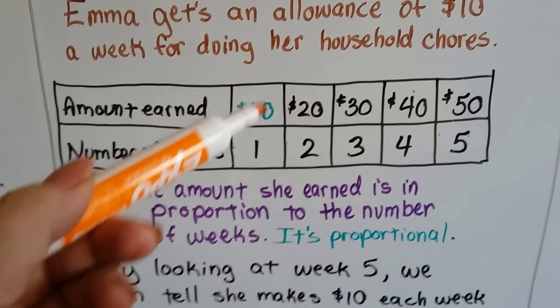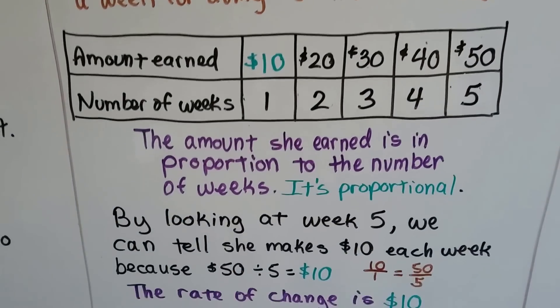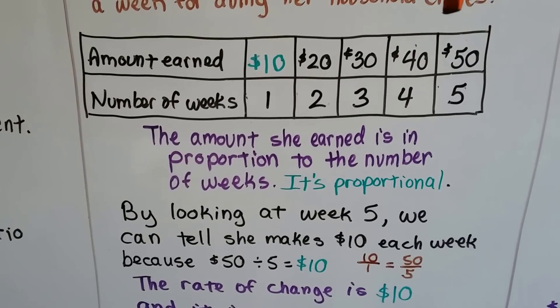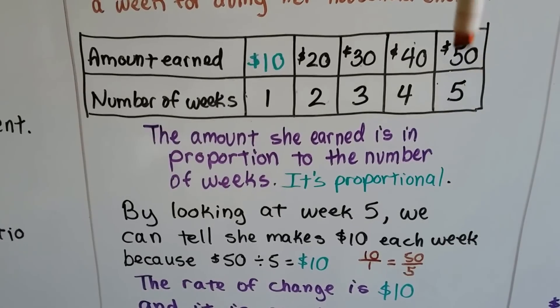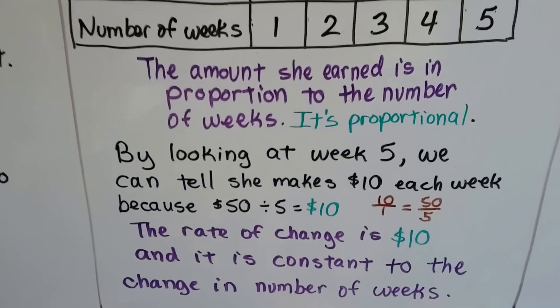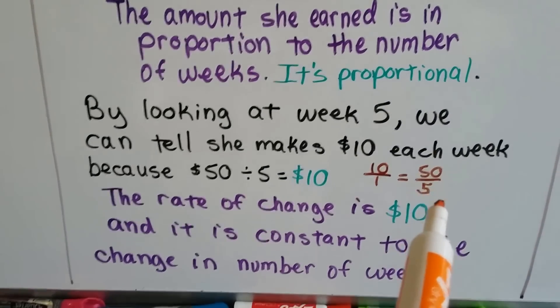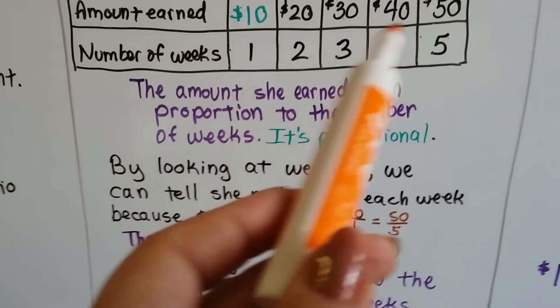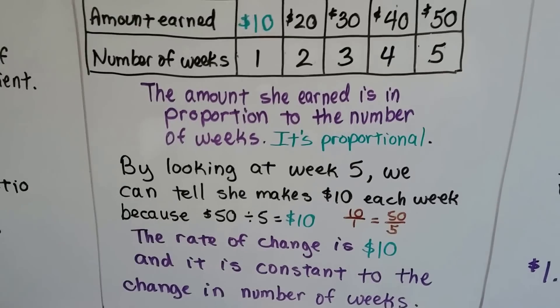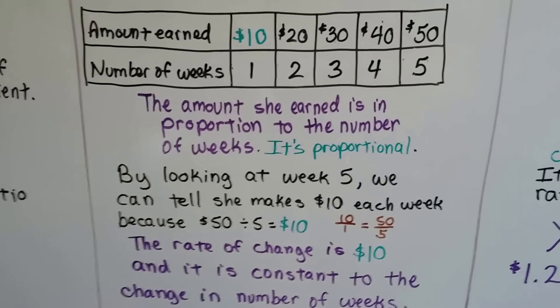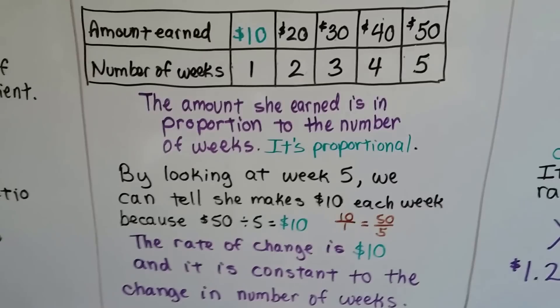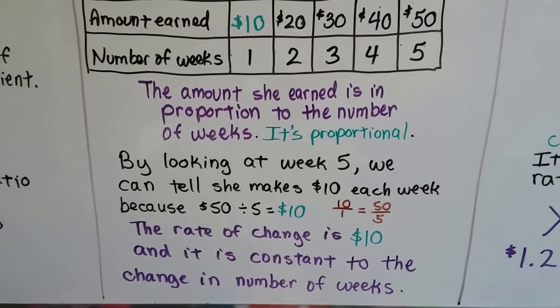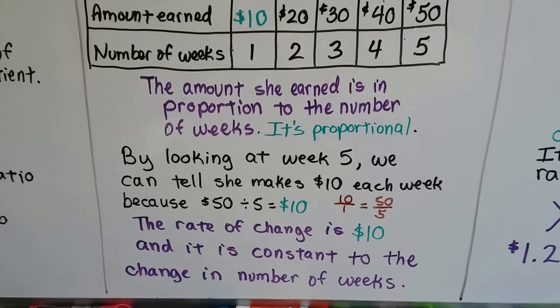The proportion of 10 to 1 is the same as 50 to 5. By looking at week 5, we can tell she makes $10 a week because 50 divided by 5 is 10. So 10 over 1 equals 50 over 5. The rate of change is $10, and it's constant with the change in number of weeks. They're in proportion to each other with a constant rate of change.